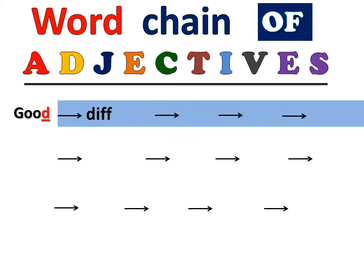From this word's last letter D, a new adjective is formed: D-I-F-F-I-C-U-L-T, Difficult. From Good we formed Difficult. From T we get Tall, from L we get Long, and from G we get Great.